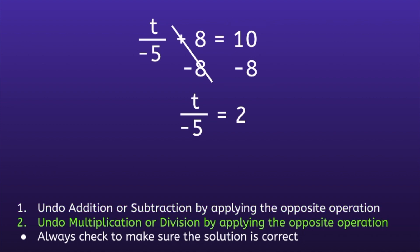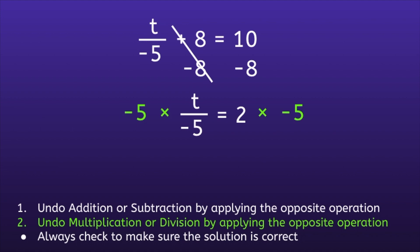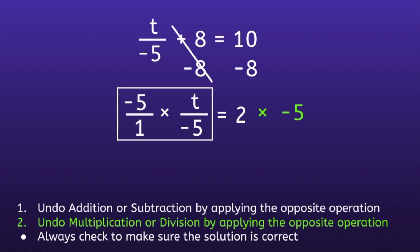This moves us on to step number 2: undo multiplication or division by applying the opposite operation. The fraction bar means division, so we are dividing t by negative 5. The opposite of dividing by negative 5 is multiplying by negative 5. If we focus in on the left, we're going to change that negative 5 into a fraction. We can turn any whole number into a fraction by giving it the denominator of 1. There's also an invisible 1 in front of the t. If we pull out just the numbers and ignore the t, we have negative 5 over 1 times 1 over negative 5. These fractions are called reciprocals, because they're the same except the numerator and denominator are switched. Any time you multiply reciprocals, you will always get 1.